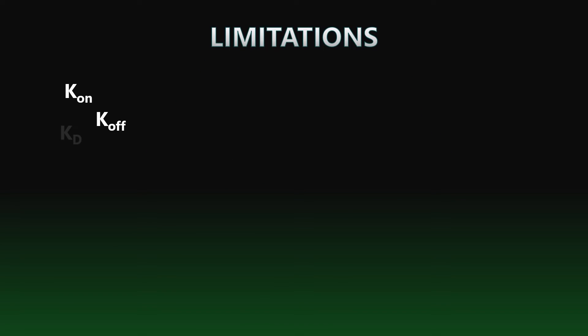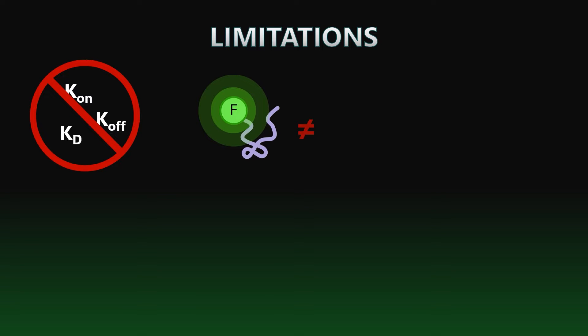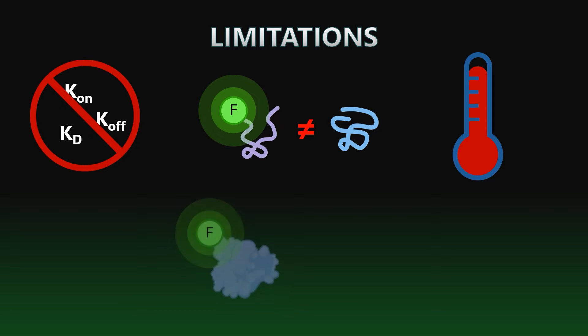There are some limitations to FPAs, which include no kinetic constants, the fluorescent tag, if not properly designed, may alter the binding properties of the tracer, sensitivity to changes in temperature, not suitable for all binding conditions, especially when the binding partner exerts little change in fluorescence polarization.